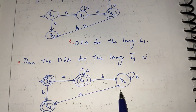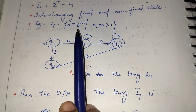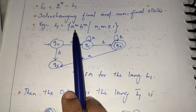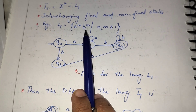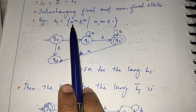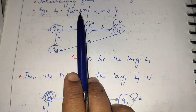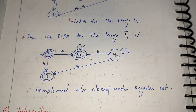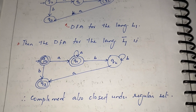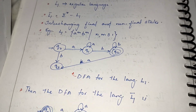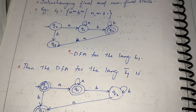For the complement, the non-final state becomes the final state and the final state becomes the non-final state. So the complement L1-dash accepts all strings where m number of A's are not followed by m number of B's — that is, the complement of the language L1.